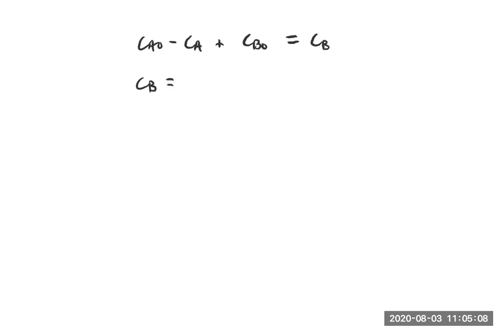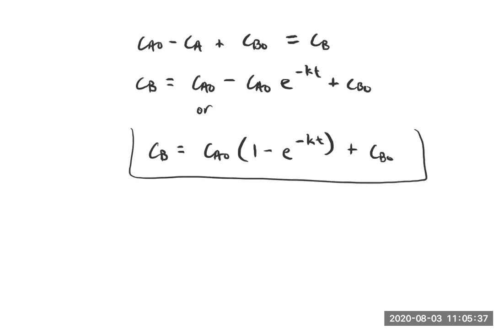So if I just introduce those terms, if I were to write, okay, CA0, and then what was our solution for CA? It was CA0 e to the minus kt and then CB0. Or we could rearrange this and just grouping terms that have CA0 and have 1 minus e to the minus kt plus CB0 and now we,